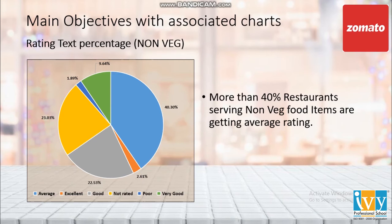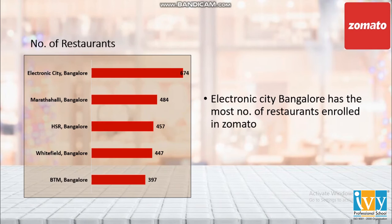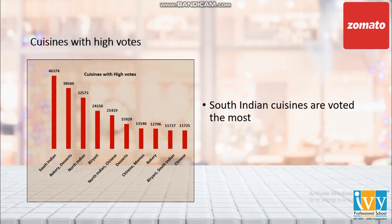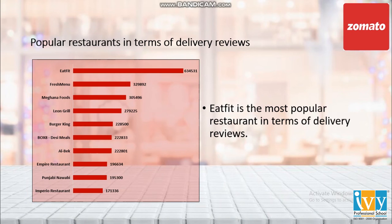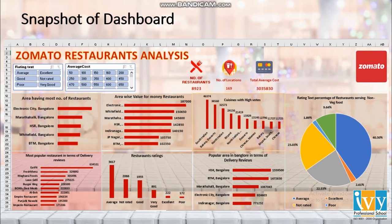These are the charts that have been made. The chart shows that around 40% of restaurants serving North Indian food items are getting average ratings. Electronic City, Bangalore has the most number of restaurants enrolled in Zomato. South Indian cuisine is voted the most by food lovers of Bangalore. In terms of delivery reviews, EatFit is the most popular. This is the snapshot of the dashboard.